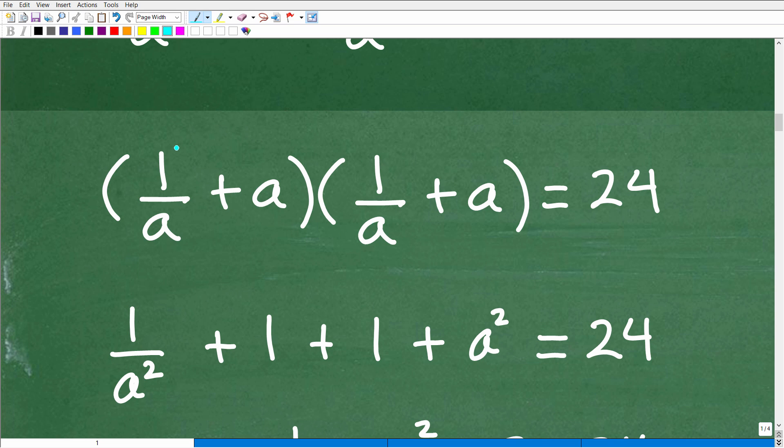Okay, so first, outer, inner, last means we're going to multiply 1/a times 1/a. And when we do that, I'm going to get 1/a². Okay, so that's my first, right? I'm following the FOIL method: first, outer, inner, last.